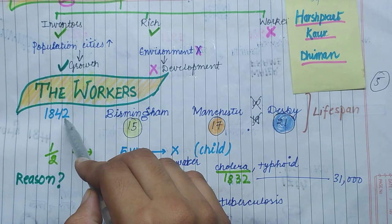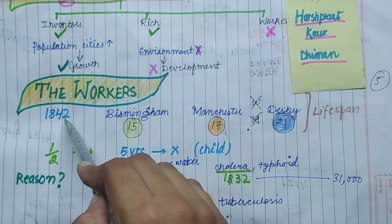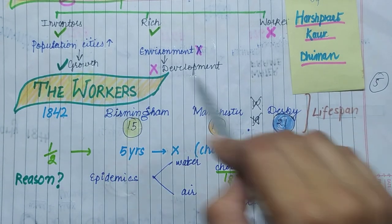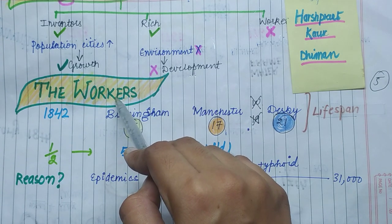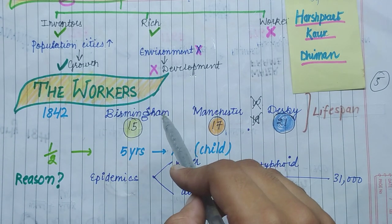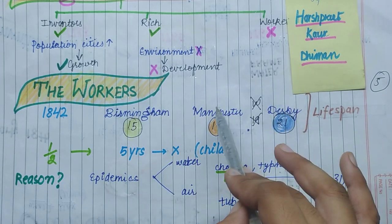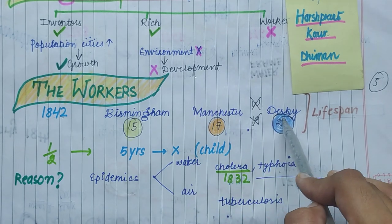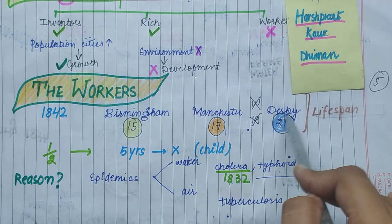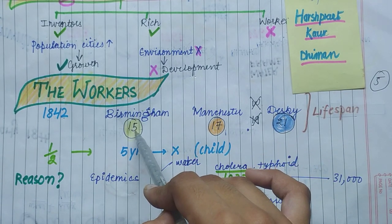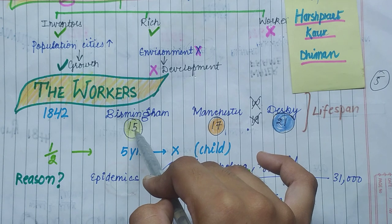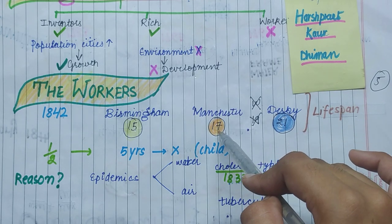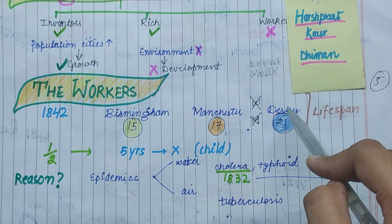Now we will study the actual condition of workers. In 1842, a survey was done to check the average lifespan of workers. In Birmingham the average worker lifespan was 15 years, in Manchester it was 17 years, and in Derby it was 21 years.